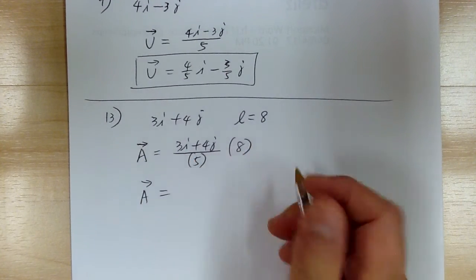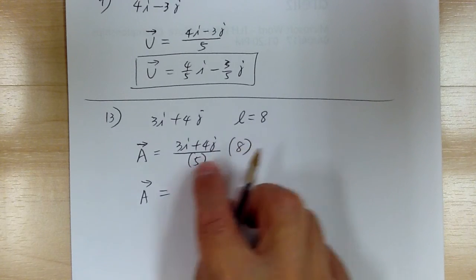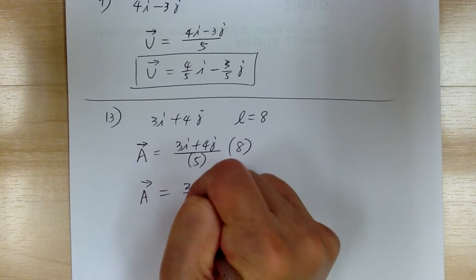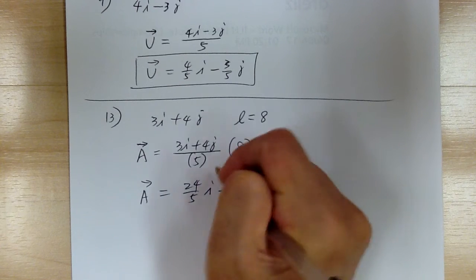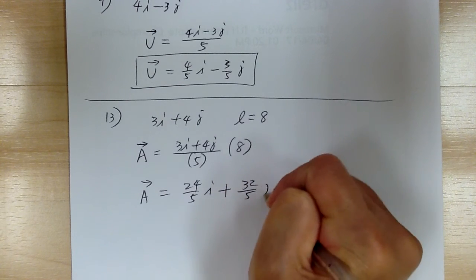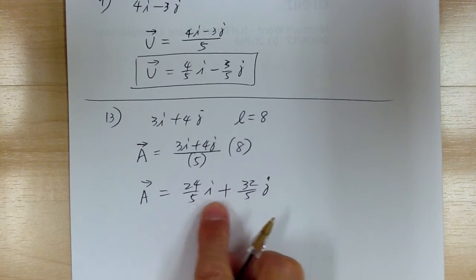And so now you're just going to work it out. So 3 times 8 is 24 over 5, so you got 24 over 5i plus 32 over 5j. You can always write in this form, ij form. And that's it for number 13.